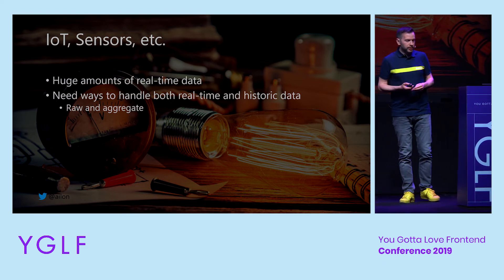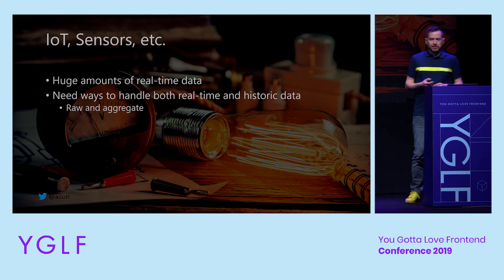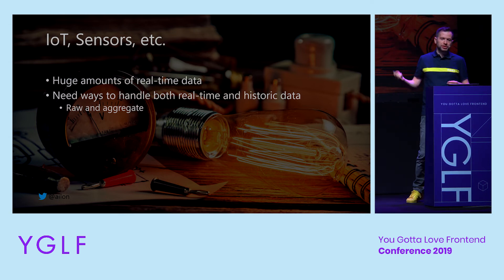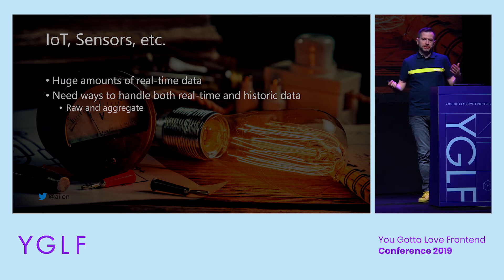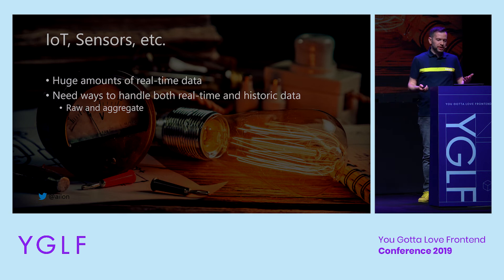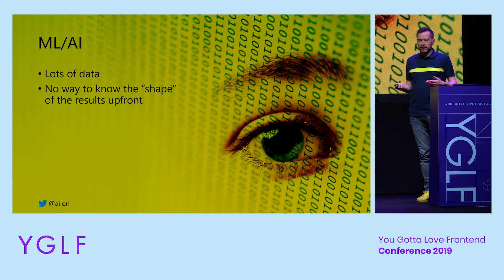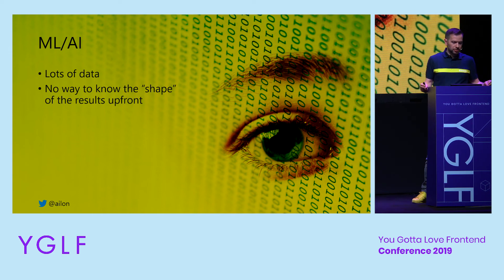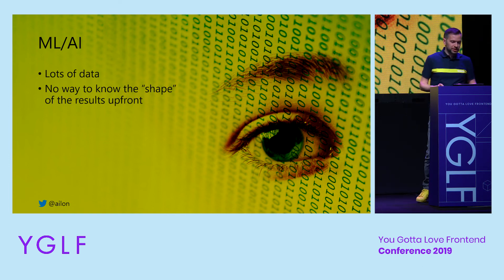We've connected a lot of devices to the internet and they generate a lot of data, which is quite difficult to visualize. This is one area where SVG is probably not your best friend — Canvas is better when you need to display real-time data with little overhead. And when you get a lot of data, it doesn't always make sense to see the raw data, so your library needs an option to aggregate it. The same is true for machine learning and AI — when you put your data through an AI algorithm, you don't even know what shape you'll get in the end.